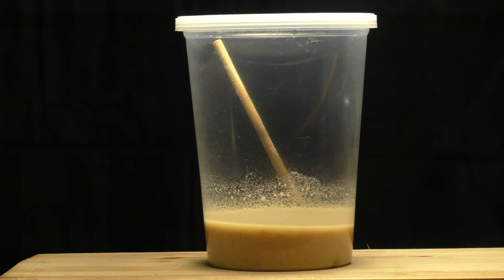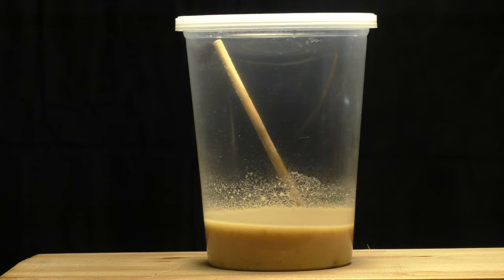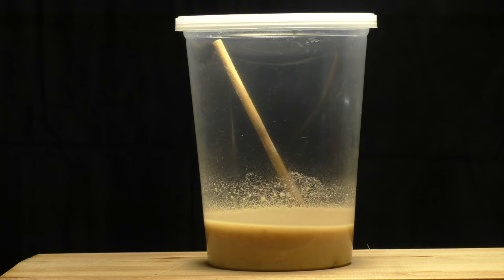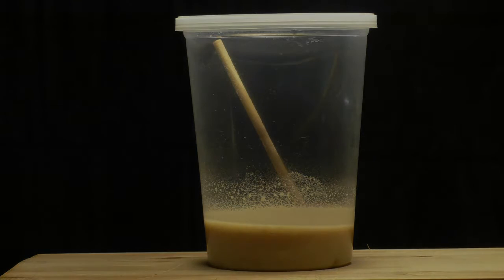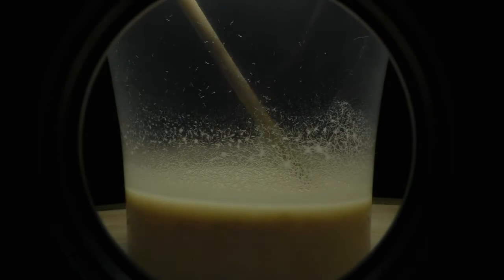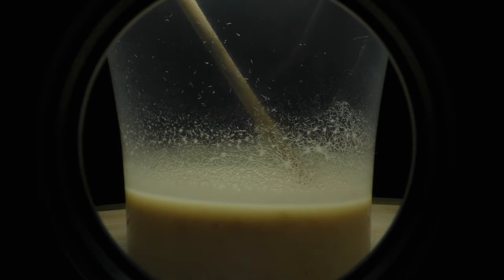Microworms are an excellent live food item to add to the diet of your baby fish. They are cultured on a medium of moist oatmeal, cornmeal, or instant mashed potatoes. I keep mine in a 32-ounce deli container. Let's take a closer look.